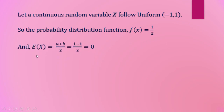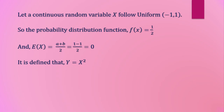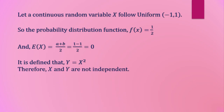The expectation of X is (a + b)/2 = (−1 + 1)/2 = 0. Since Y = X², X and Y are not independent — we can clearly see that X and Y are dependent.